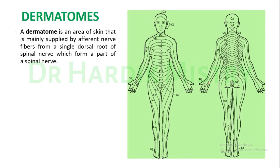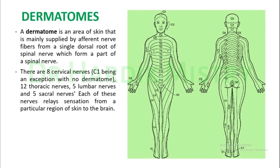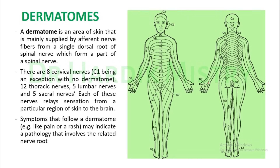Before we begin with the sensory system examination, we must know about dermatomes. What is a dermatome? A dermatome is an area of skin that is mainly supplied by afferent nerve fibers from a single dorsal root of a spinal nerve. There are eight cervical, twelve thoracic, five lumbar, and five sacral nerve roots. Each of these nerve roots relays sensation from a particular region of the skin to the brain. Symptoms that follow a dermatome may indicate a pathology involving the related nerve root.